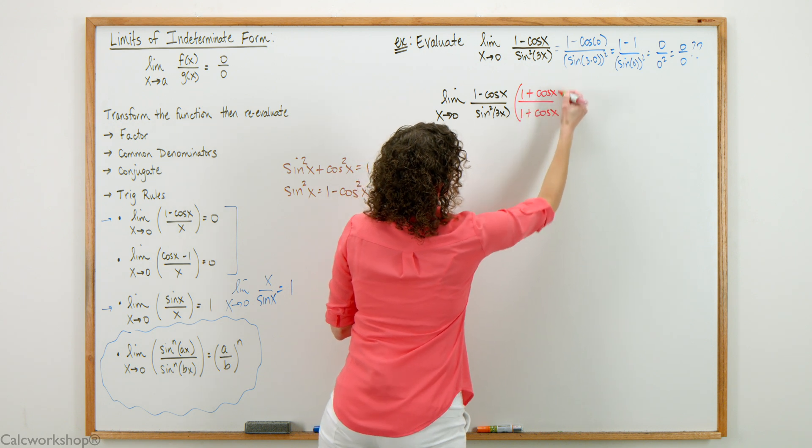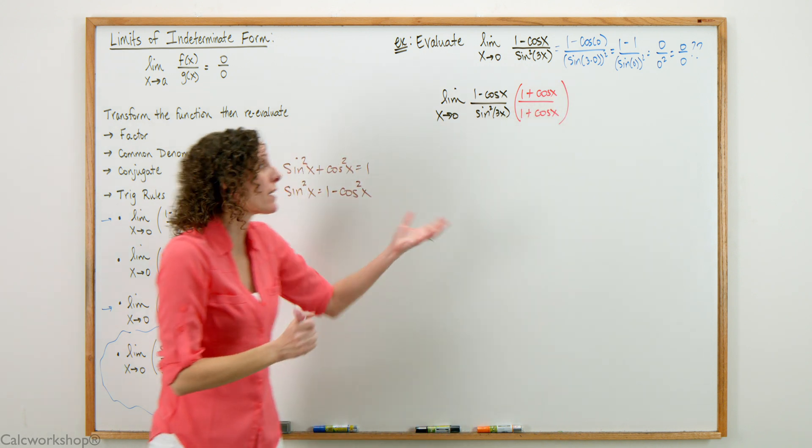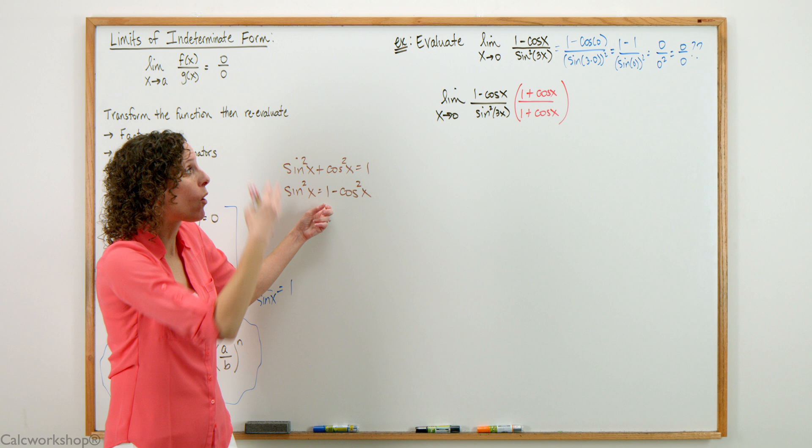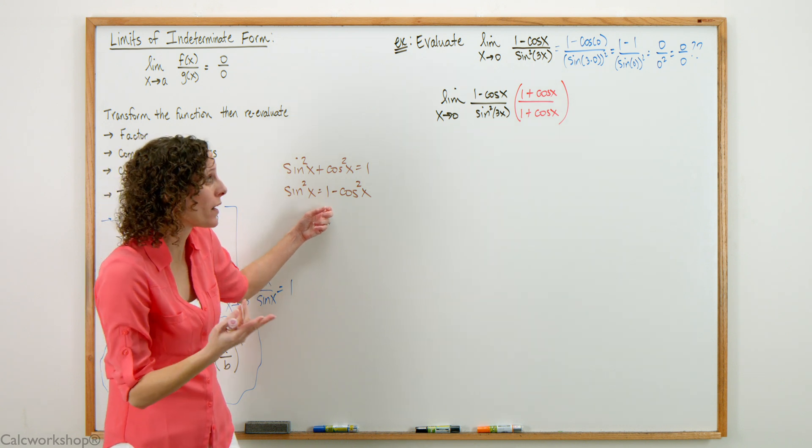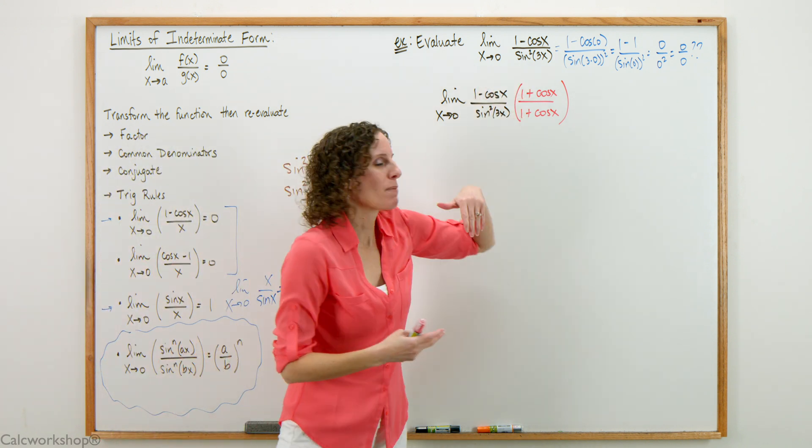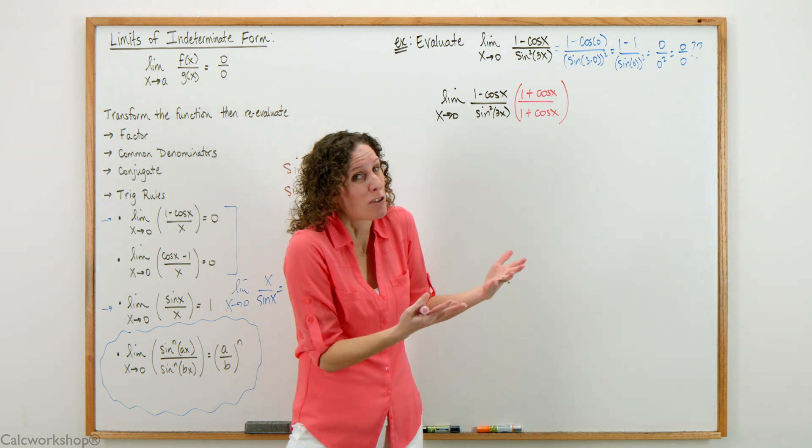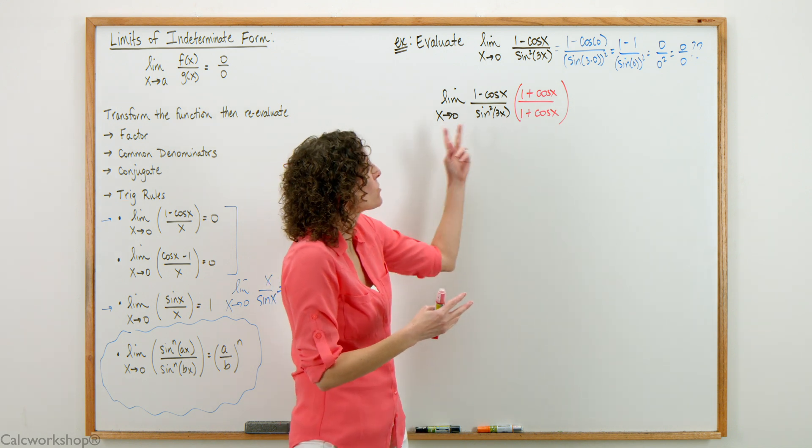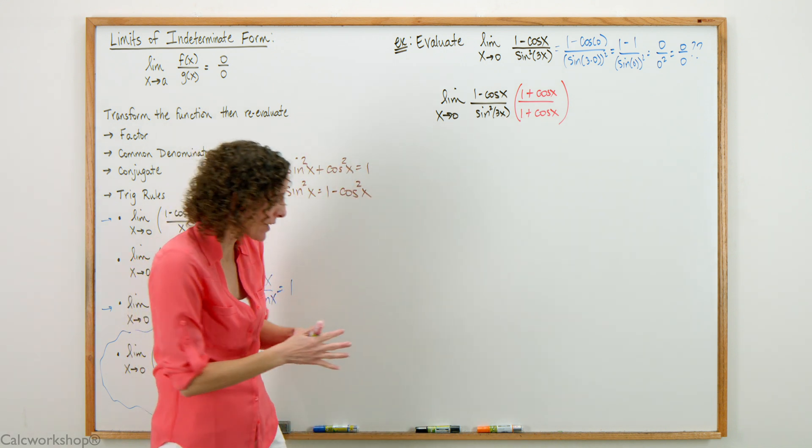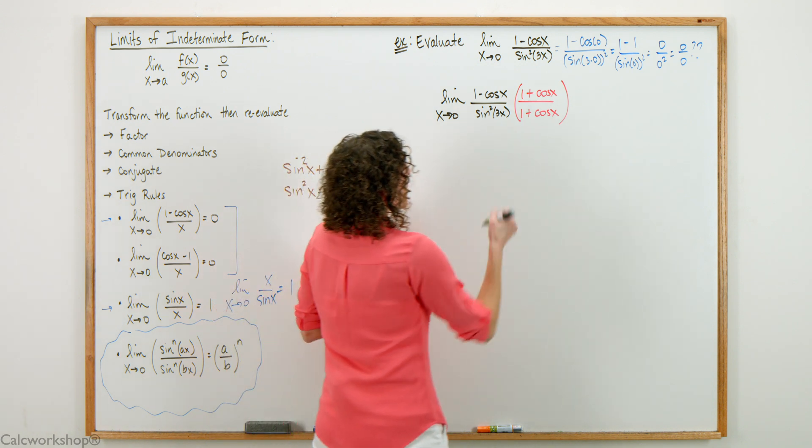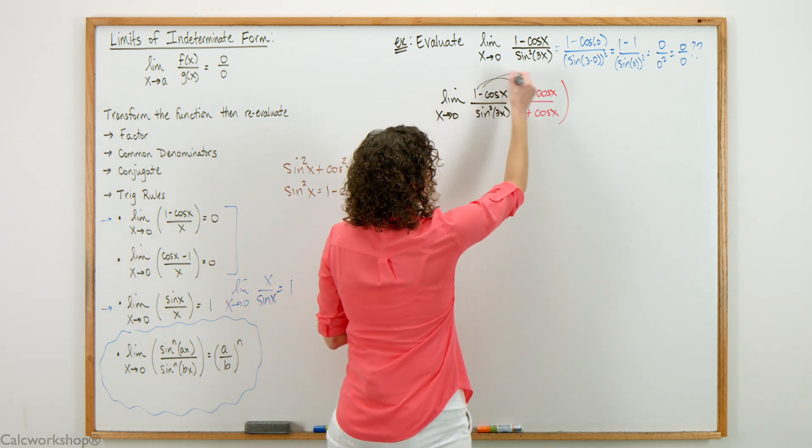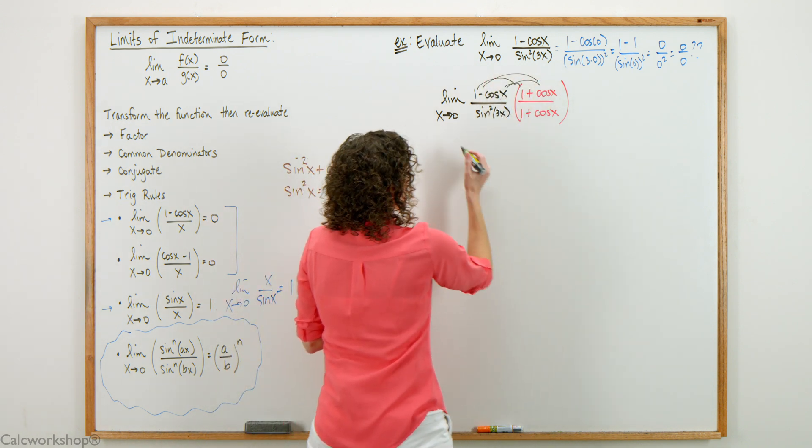We can't just multiply whatever we want to achieve what we're looking for. We have to only multiply by the value of 1. 1 plus cosine x divided by 1 plus cosine x reduces to 1, and we can multiply anything by 1 and nothing changes. But in doing so, we can do something very clever.